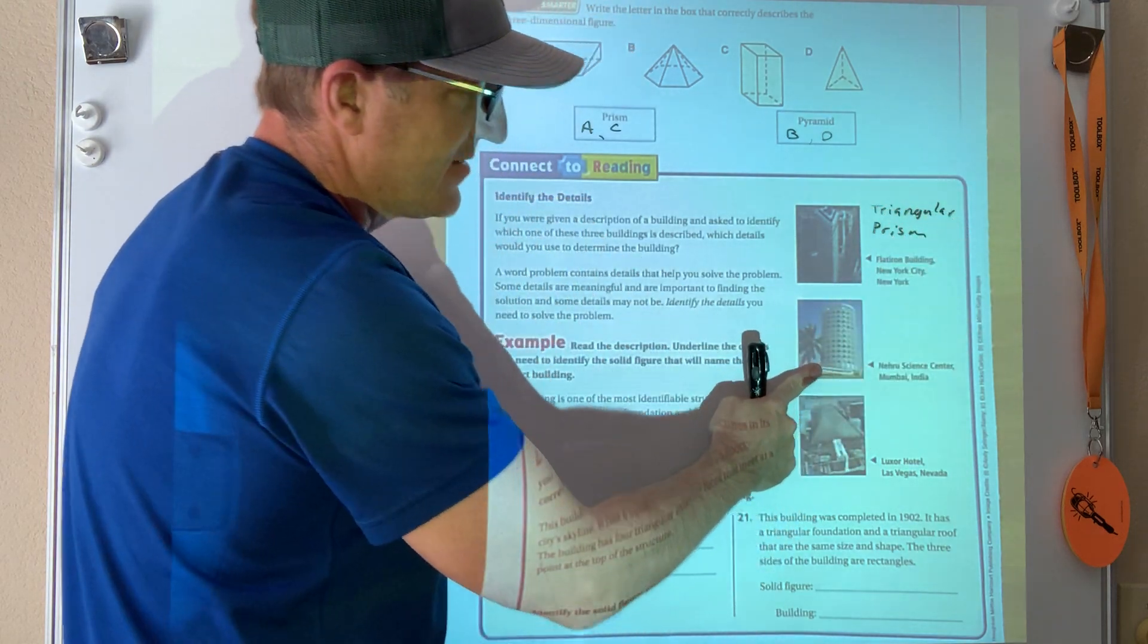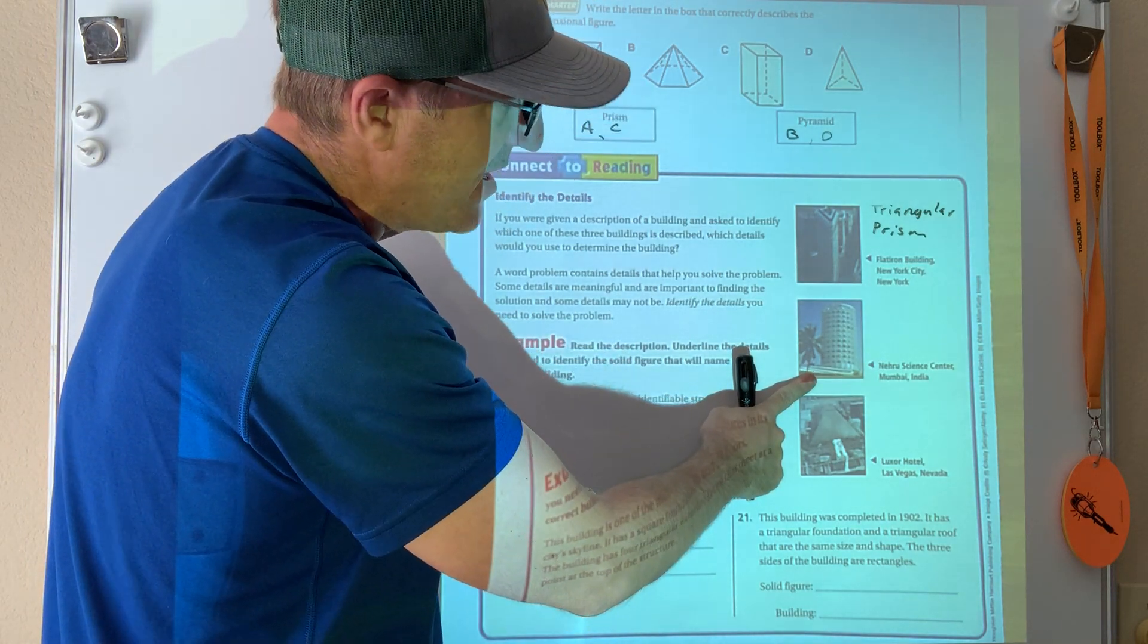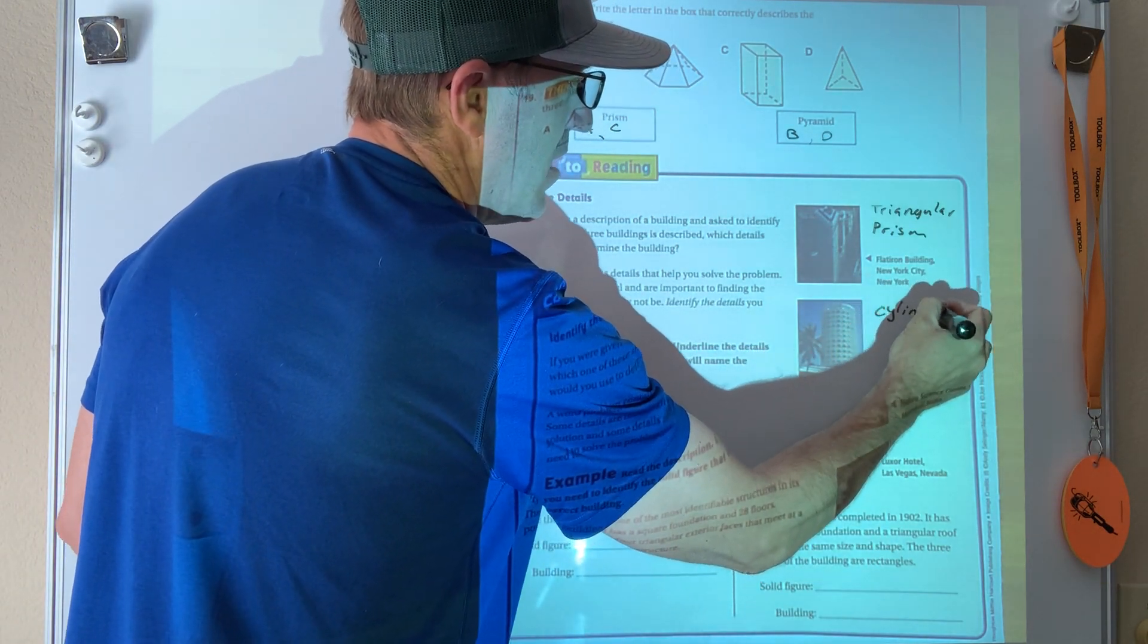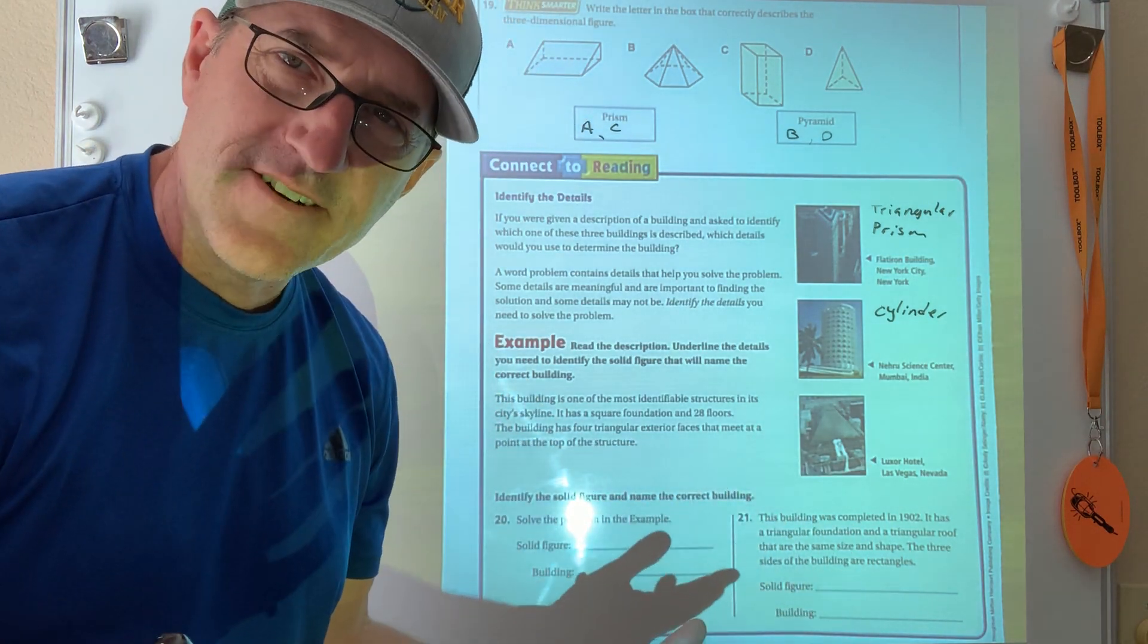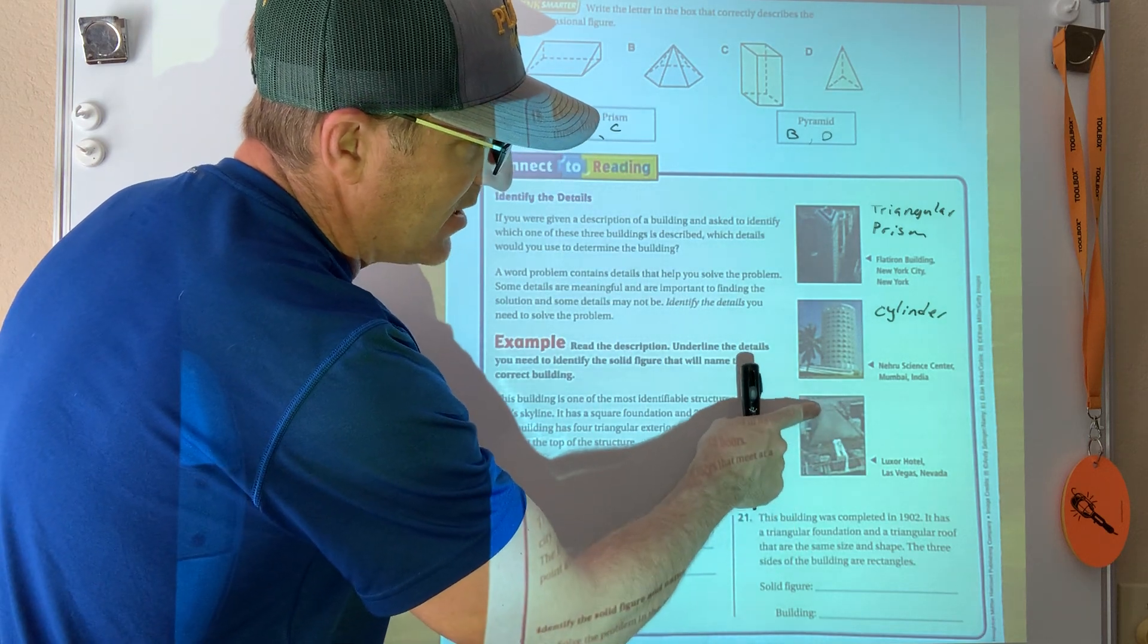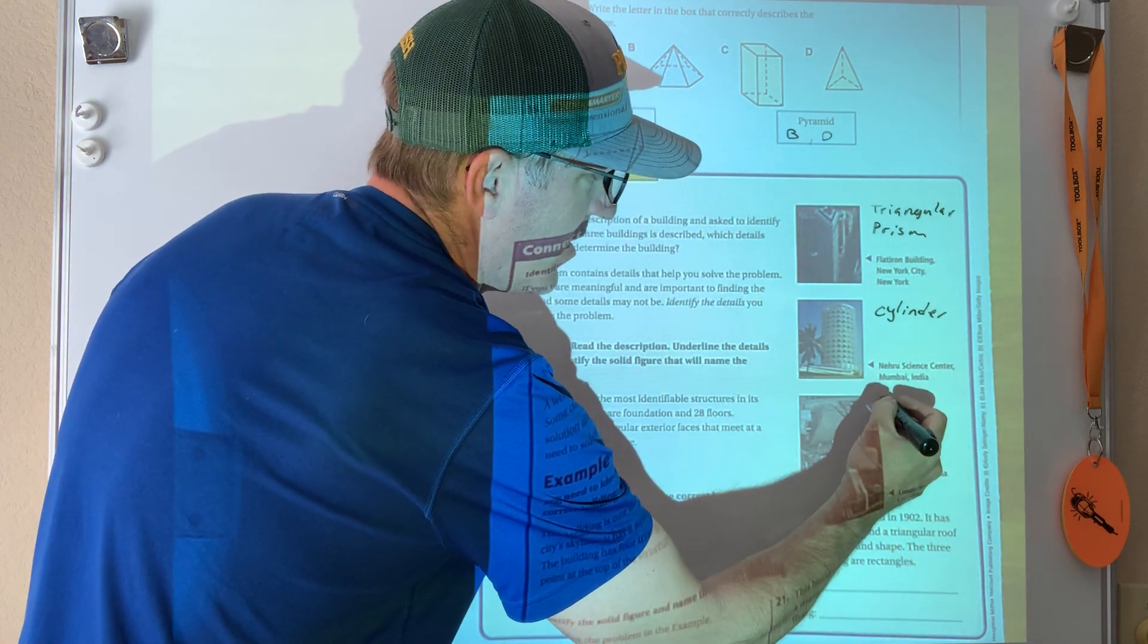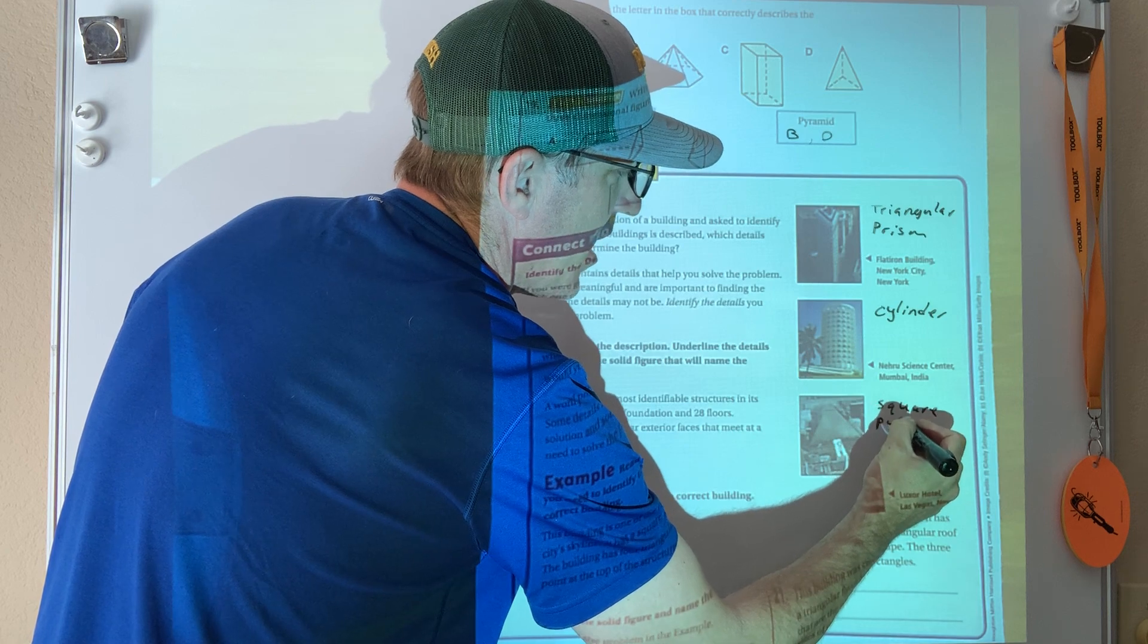That's obviously a... what? This is the Nehru Science Center, Mumbai, India. It's a cylinder. All right, and then here, this is the Luxor Hotel in Las Vegas, Nevada, home of the Raiders. And if you look at it, if you can see on yours, it's actually Luxor is Egypt, so it's got a point at the top. So this is a square pyramid because it has a square at the bottom.